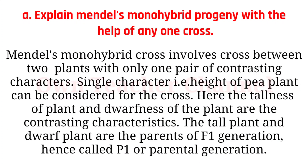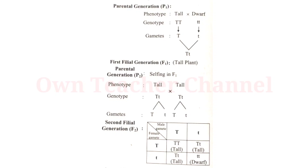Question 2: Explain Mendel's monohybrid cross with the help of an example. Mendel's monohybrid cross involves a cross between two plants with only one pair of contrasting characters. The height of a pea plant is considered for the cross — tallness and dwarfness are the contrasting characteristics. The tall plant and dwarf plant are the parents of F1 generation, called P1 or parental generation. All plants produced in F1 generation are tall, having genotype capital T and small t.